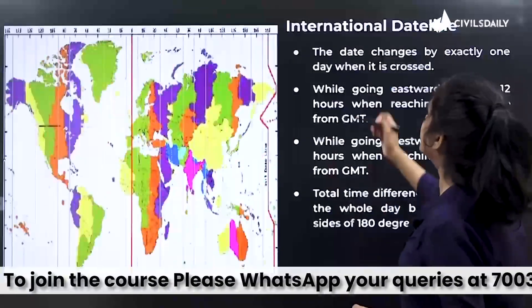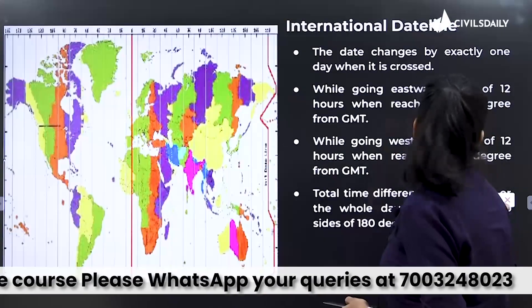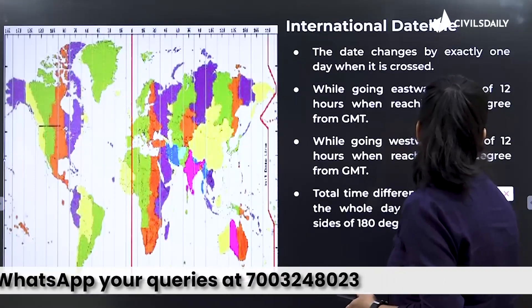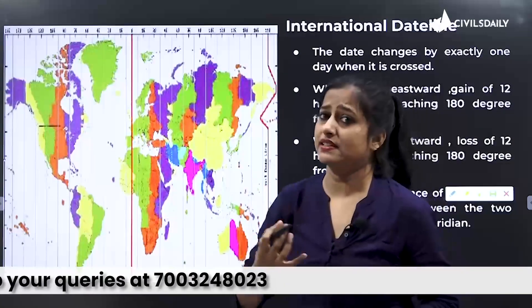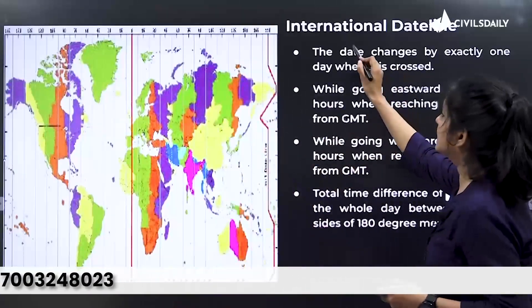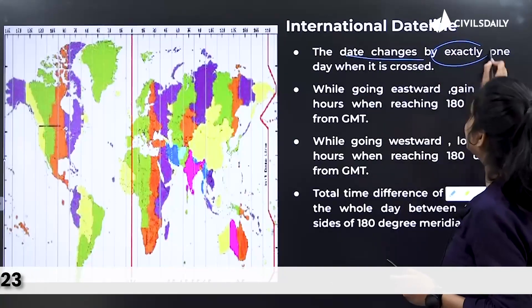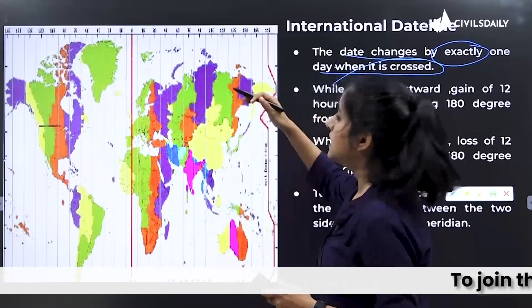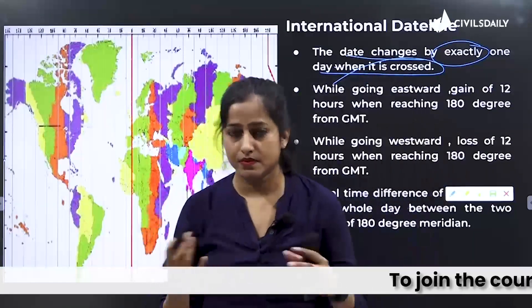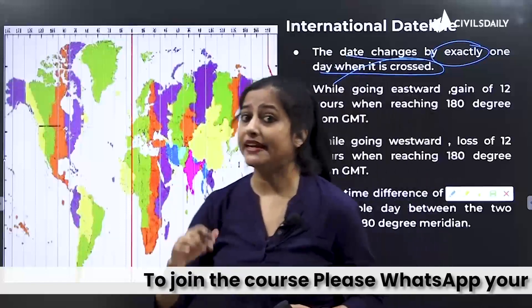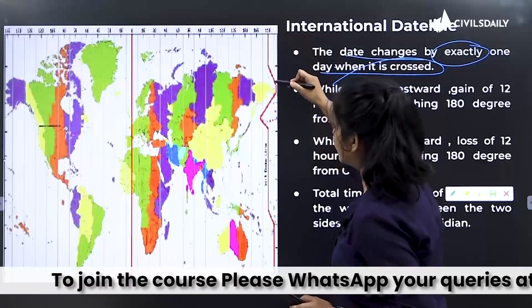This is your international date line. As the name suggests, the international date line has to do with date — it is the line where the date changes by exactly one day when it is crossed. In the previous video I mentioned that zero degree is your GMT, Greenwich Mean Time. Exactly opposite to it, at the 180-degree angle, is where the international date line is drawn.